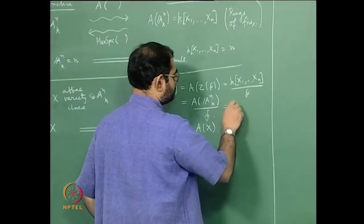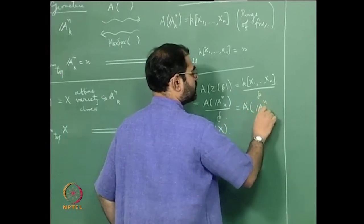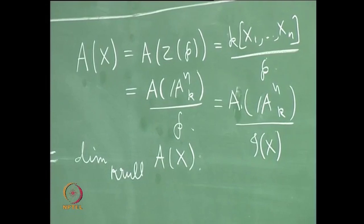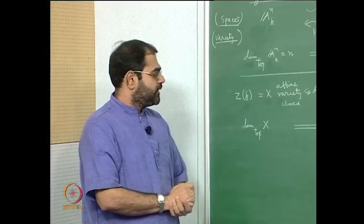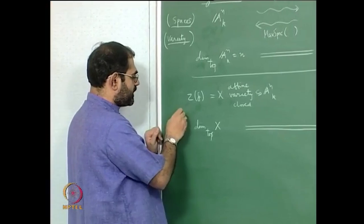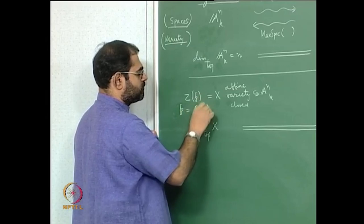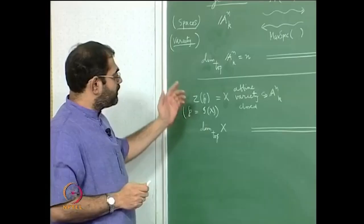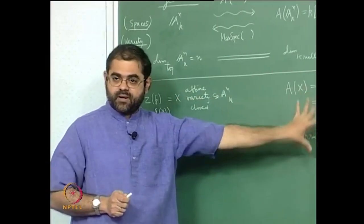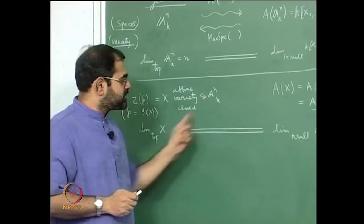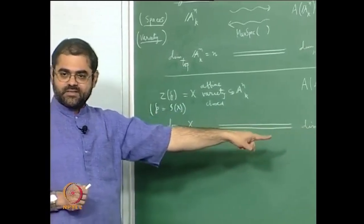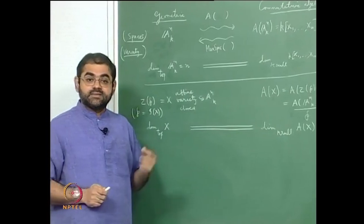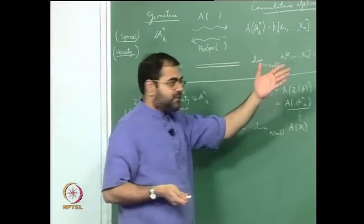The first thing I want to explain is why we define the ring of functions on X like this — why we define A(X) to be the ring of functions on the whole space divided by the ideal of X. In fact, this can simply be written as A(A^n) / I(X), where I(X) is the ideal of the given subset, which is P. So we can write that P equals I(X).